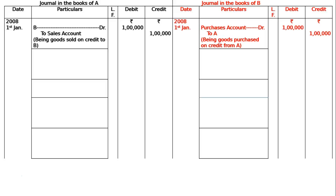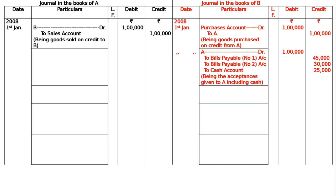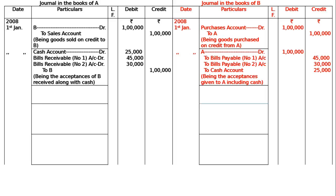That means in the books of B on January 1: A debited Rs. 1 lakh; bills payable account Rs. 45,000 for 1st bill; bills payable account Rs. 30,000 for 2nd bill; cash account Rs. 25,000 — being the acceptance given to A including cash. If B is giving, A is getting. In the books of A: cash account debited Rs. 25,000, bills receivable number 1 account debited Rs. 45,000, bills receivable number 2 account debited Rs. 30,000, to B Rs. 1 lakh — being the acceptances of B received along with cash.